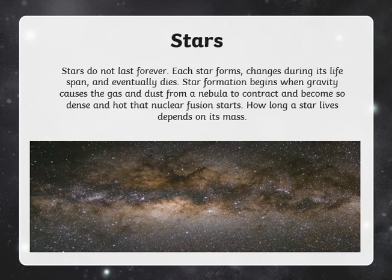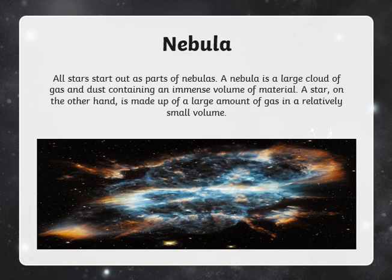To begin with the life cycle of a star, we should start from the nebula. A nebula is a large cloud of gas and dust, and that is how a star starts to form.